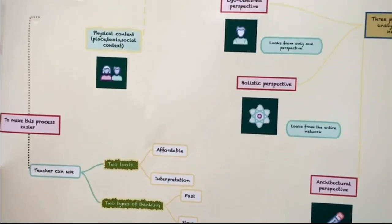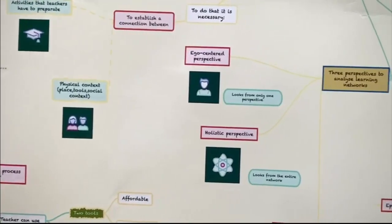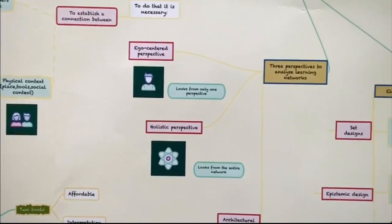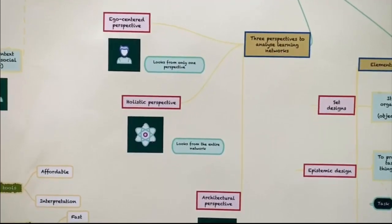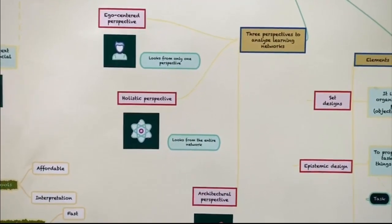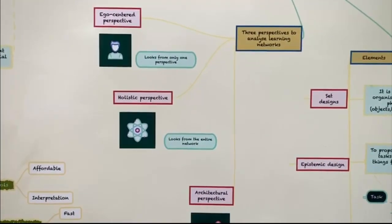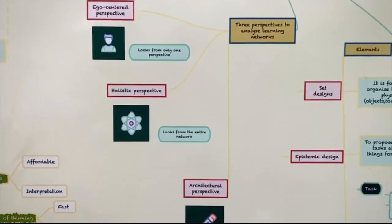There are at least two perspectives from which learning network can be analyzed. Ego-centric perspective, which means that you see the whole network of learning from one of its members. And holistic perspective, which means that you look at the whole network from above.